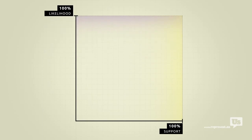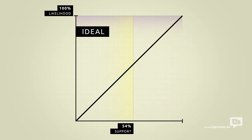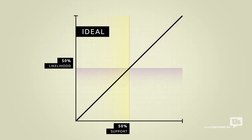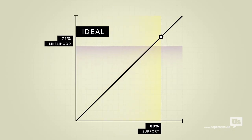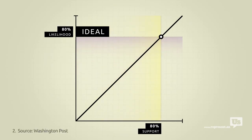On this graph, an ideal republic would look like this. If 50% of the public supports an idea, there's a 50% chance of it becoming law. If 80% of us support something, there's an 80% chance. You get the idea.